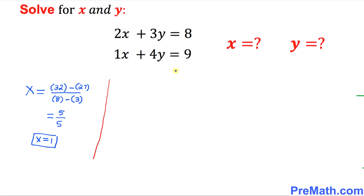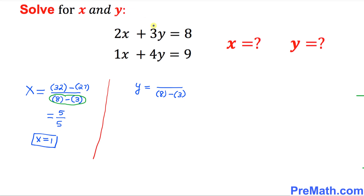Piece of cake! Now let's find the value of y — we're going to repeat the same process. y equals a fraction. One thing to keep in mind: the denominator is going to be the same for both x and y. So I'll write down 8 minus 3, which is always the same — denominators are going to be the same.